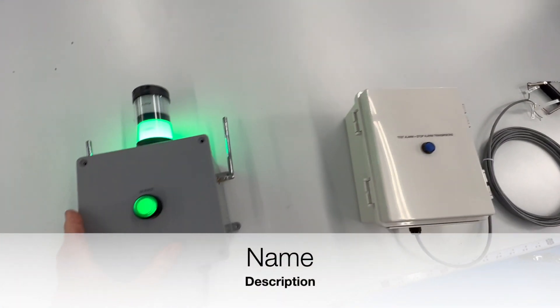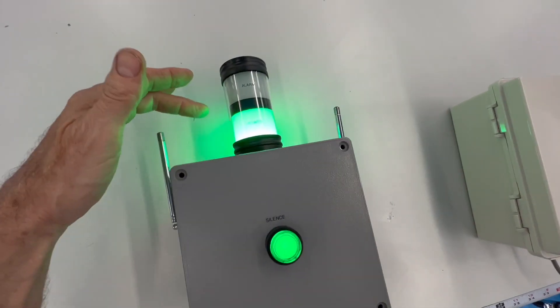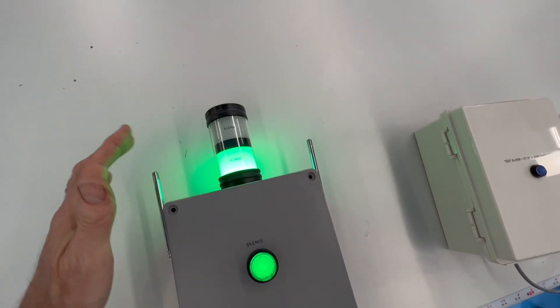All right, here's the setup for this job: wireless communication. There are two stack lights here. This one is for power and an alarm condition.